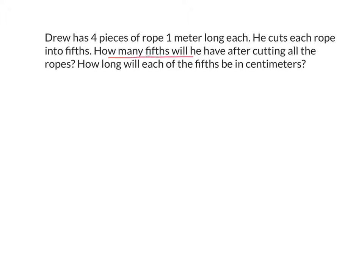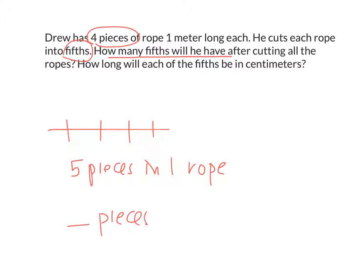Very good. The first question is asking us to figure out how many fifths will he have. Okay? What important information, let's do one question at a time. What important information do we need in order to figure out how many fifths he has? Kish? Okay, we know he has four pieces of rope. Does it matter that each piece of rope, for this question, that each piece of rope is one meter each? No. What else do I need to know? He cuts them into fifths.